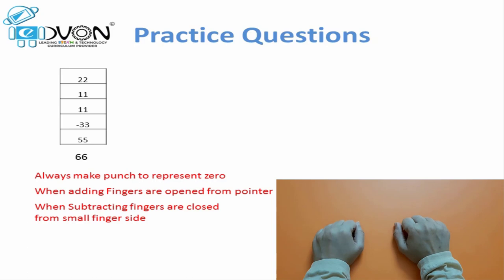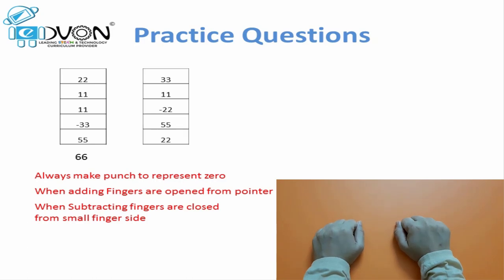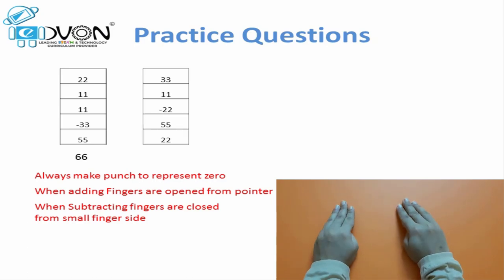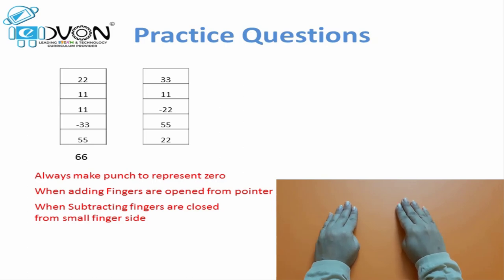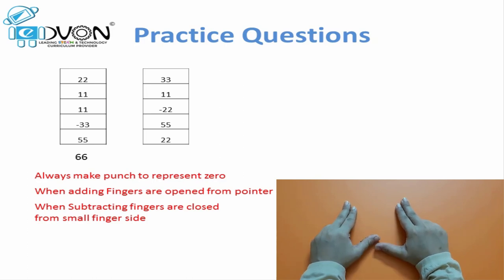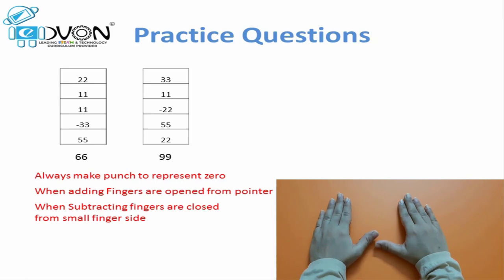Make zero and start: 33 — open three fingers on both hands. Plus 11 — open one more finger on both hands. Minus 22 — close two fingers on both hands. Plus 55 — open the thumb on both hands. Plus 22 — open two more fingers on both hands. As a result, we get 99.